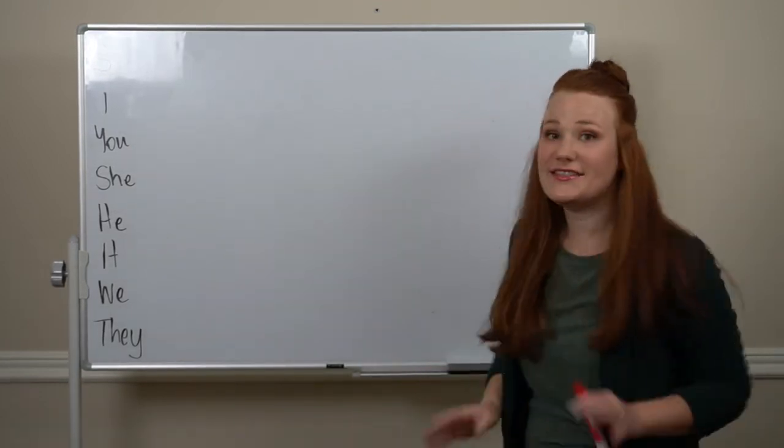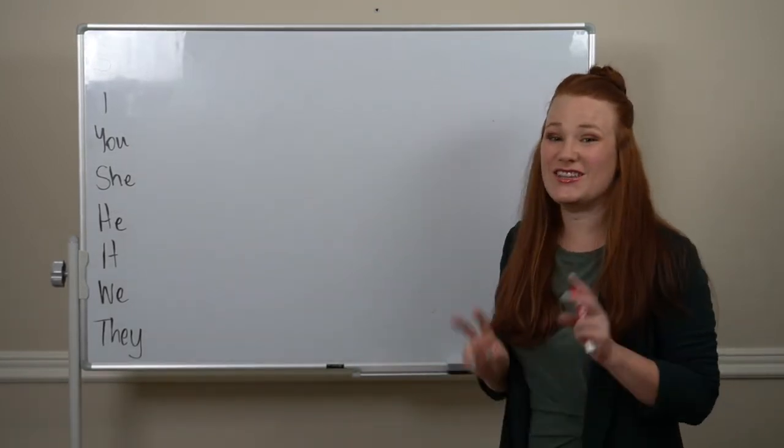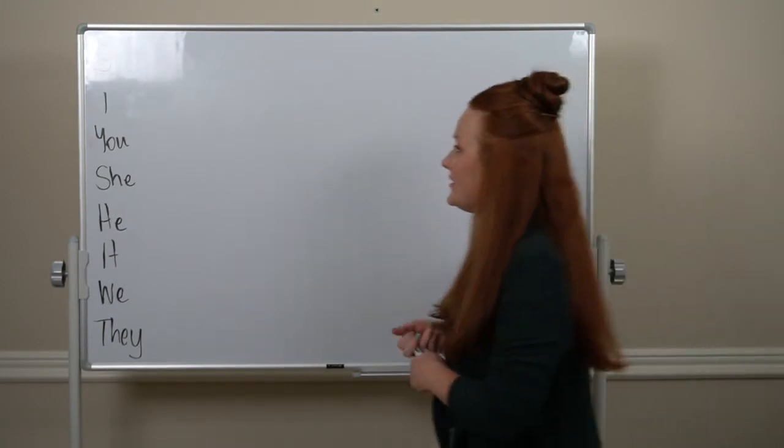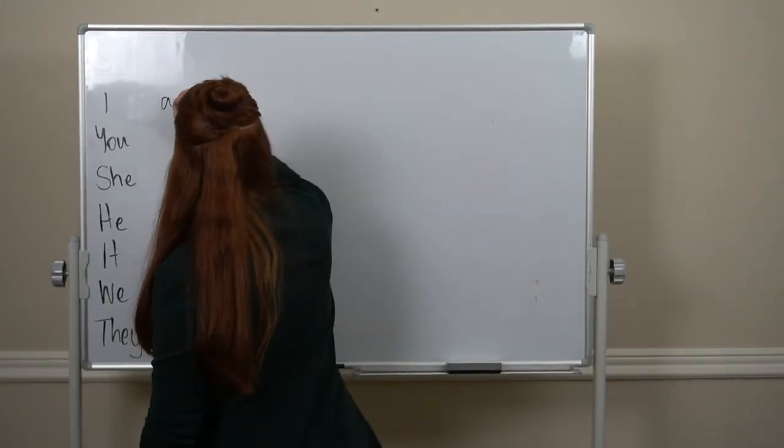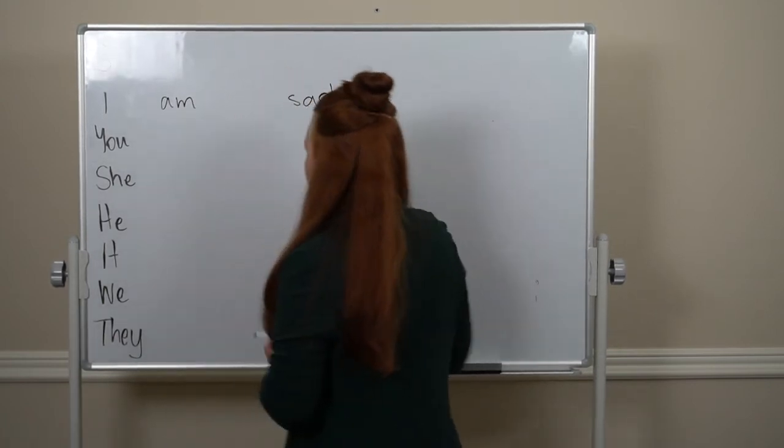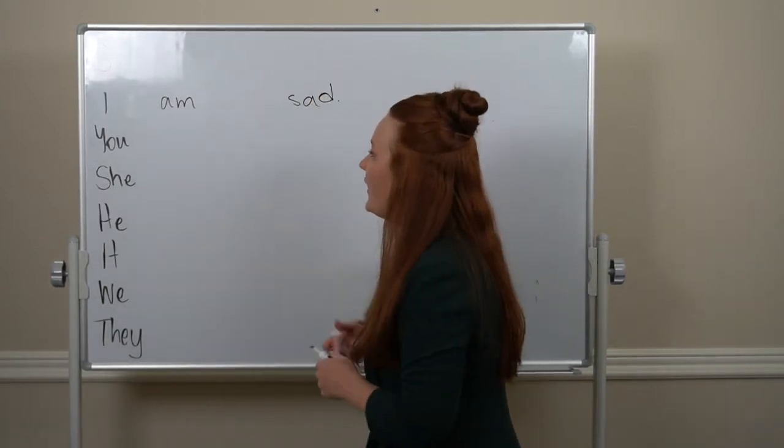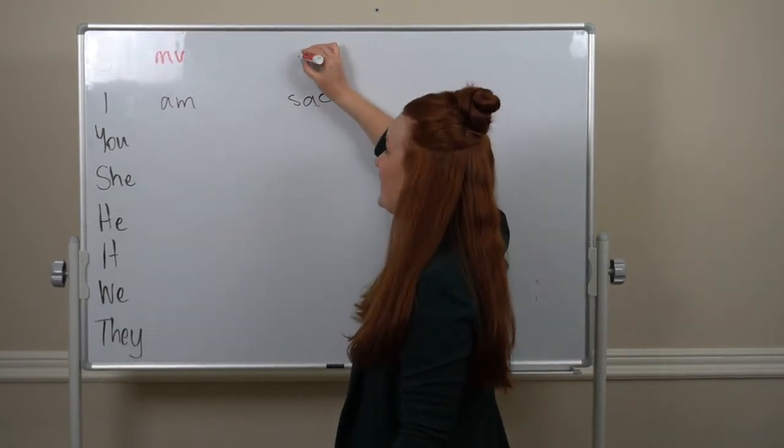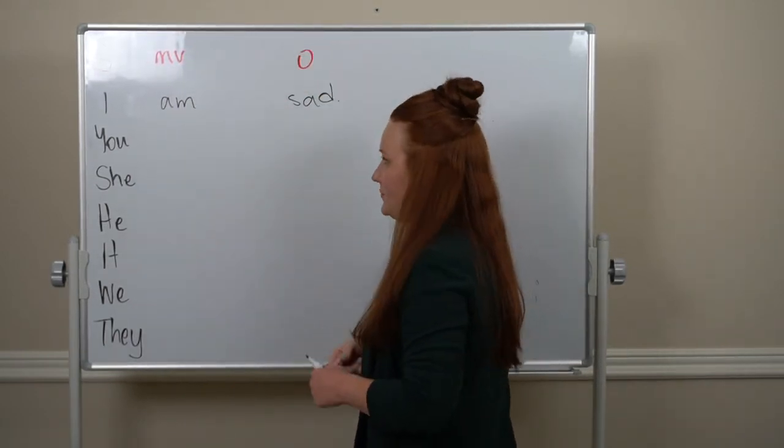So, let's talk about negating 'to be'. For a regular sentence, I am sad. We have the subject, then the main verb, and then the object, 'sad'.